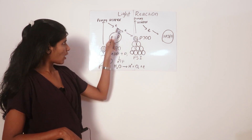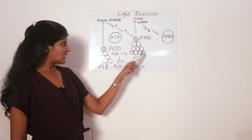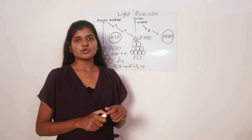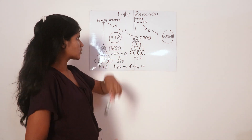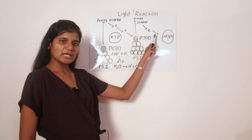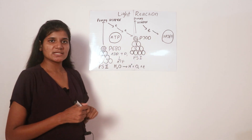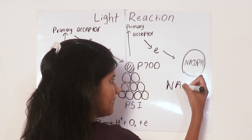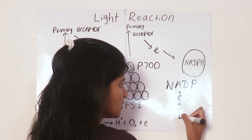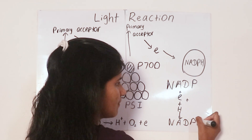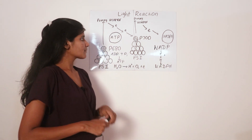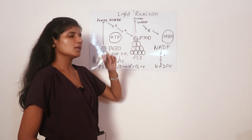The electron transport chain from the primary electron acceptor of PS2 to PS1 is linear — it occurs in a straight path, so we call it the linear electron transport chain. The excited electron accepted by the primary acceptor of PS1 also travels in a linear chain, and ultimately reduces NADP⁺ along with a hydrogen ion to form NADPH. This reaction is catalyzed by the NADP reductase enzyme.